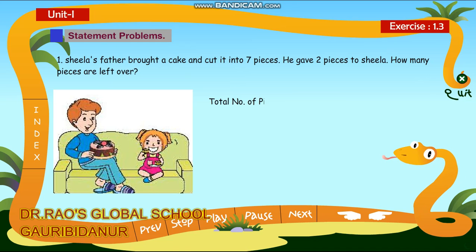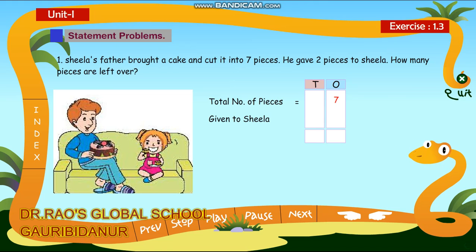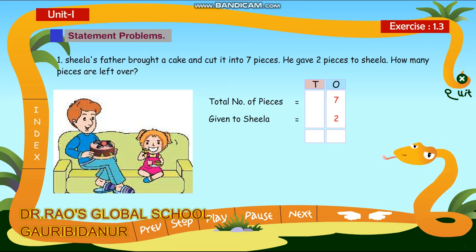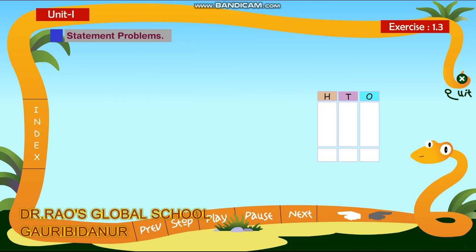Total number of pieces is equal to 7. Given to Sheila is equal to 2. Pieces left over is equal to 5.